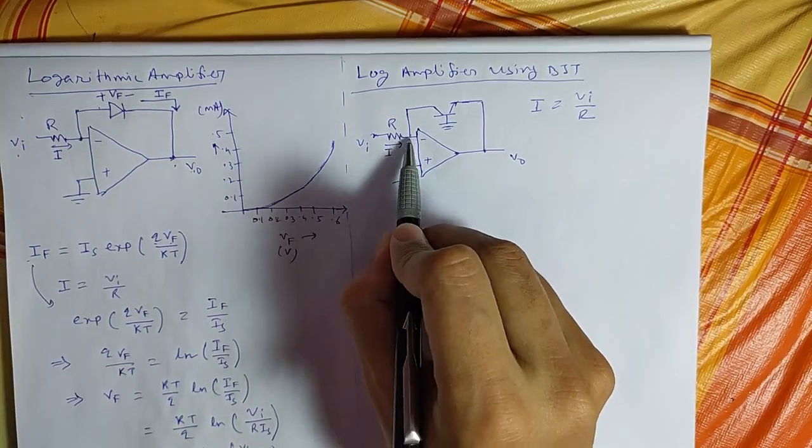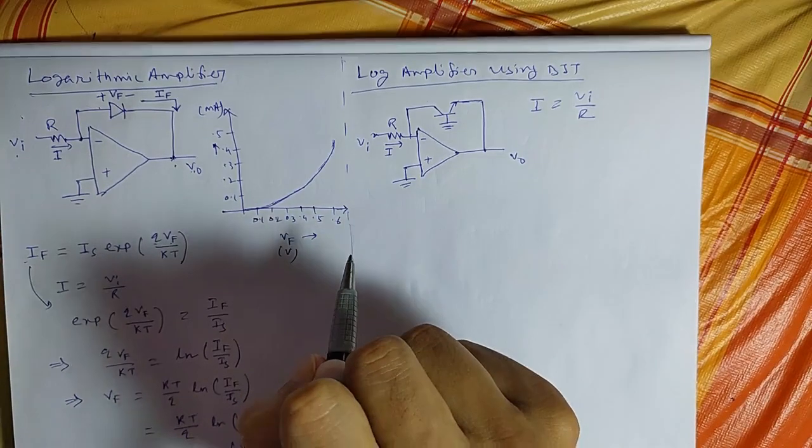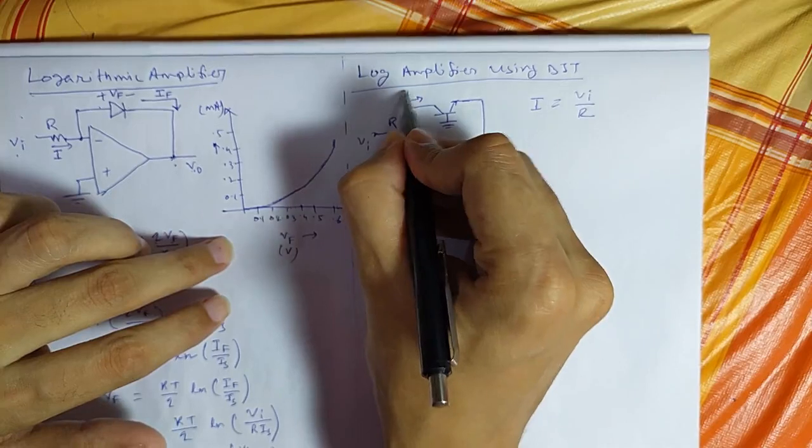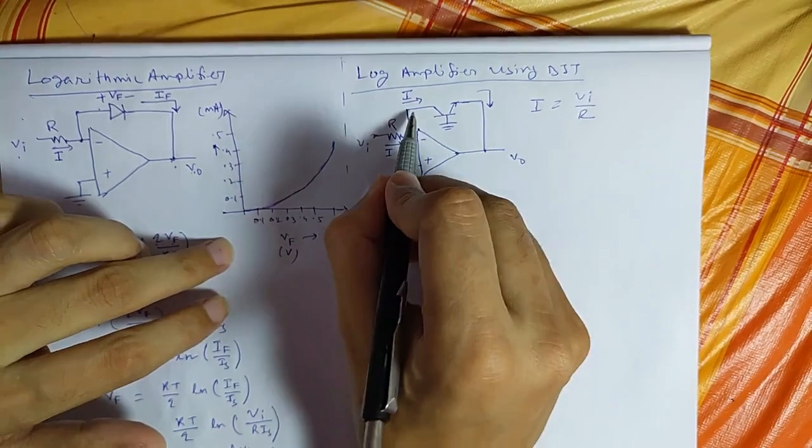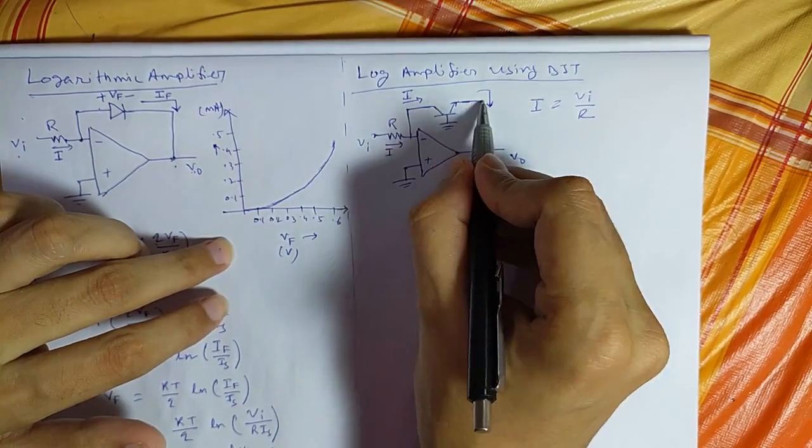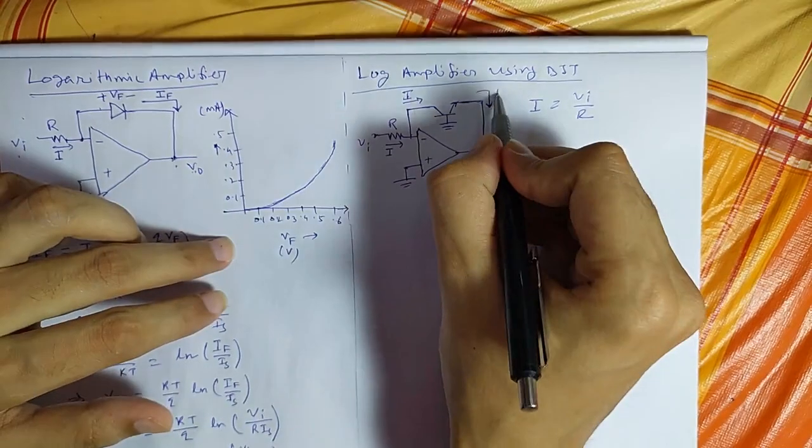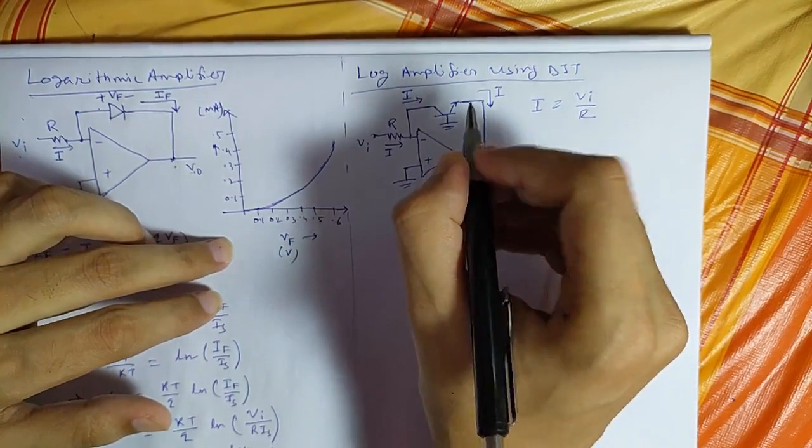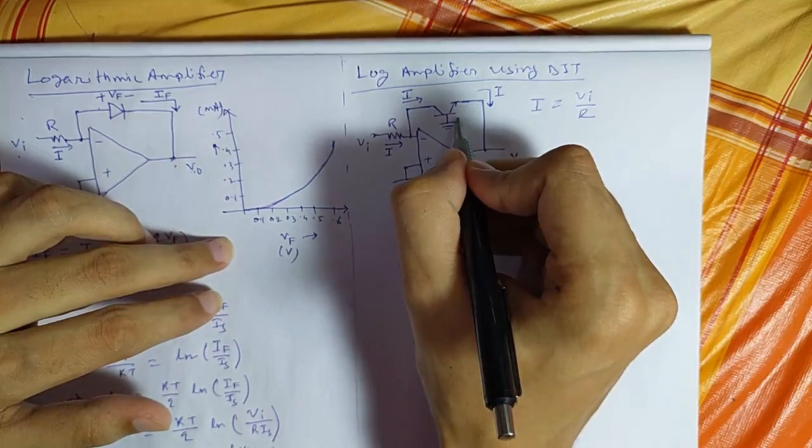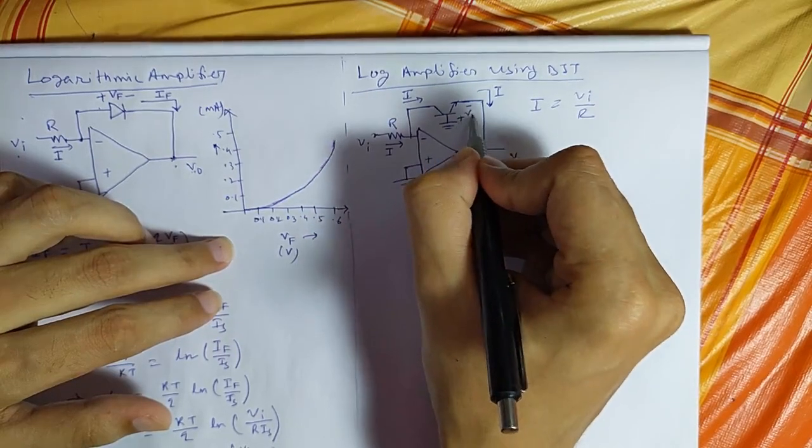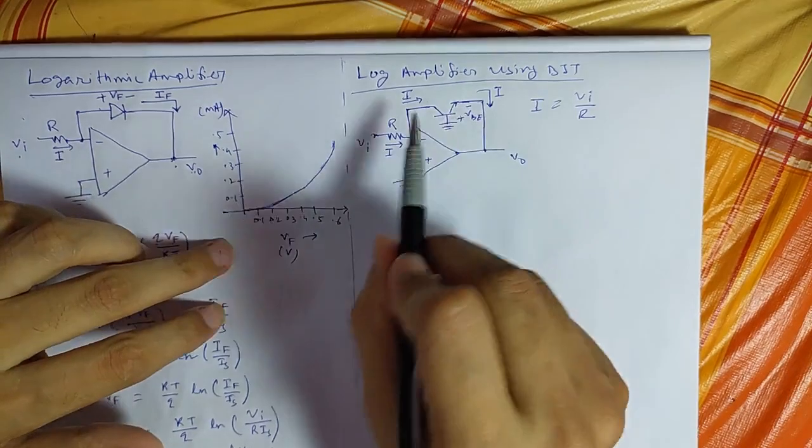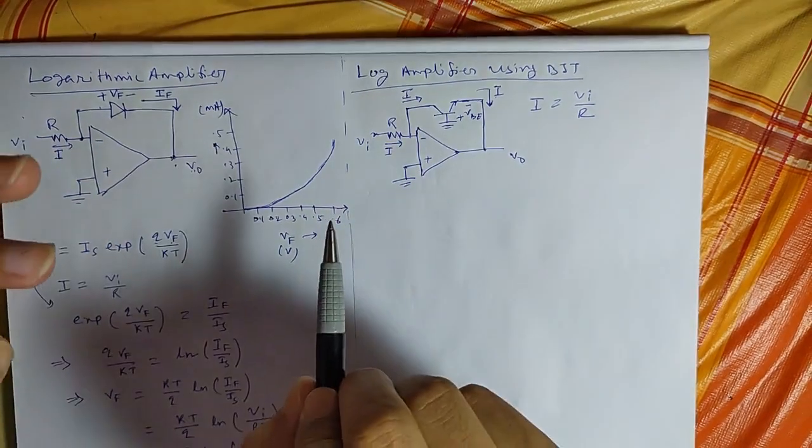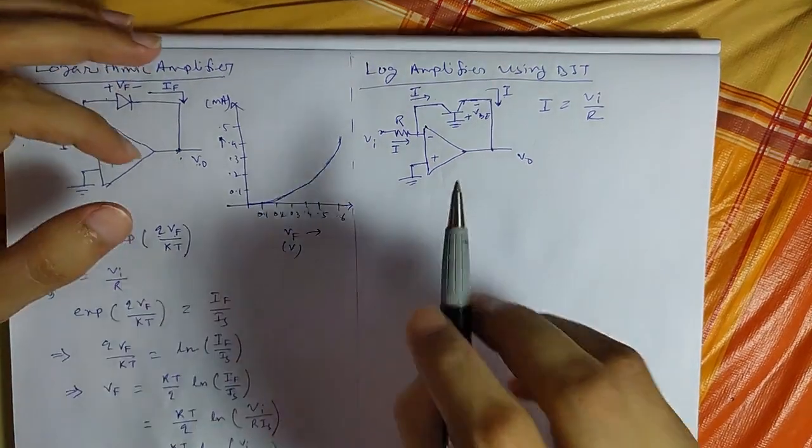Assuming this point is a virtual ground, this same I will flow through the collector-emitter. As we know that collector current and emitter current are almost equal, this I will flow. That potential is VBE. The base-to-emitter potential is VBE. The current and voltage relationship is same as the diode case.